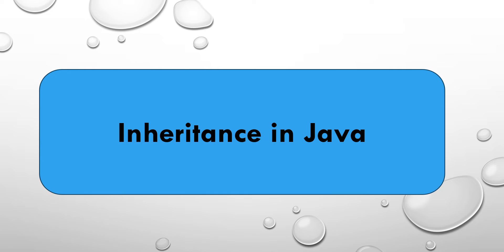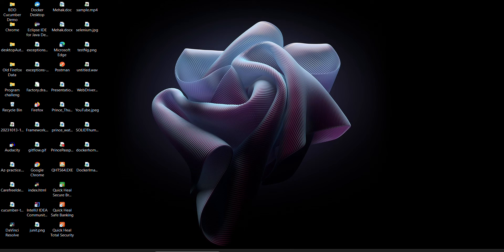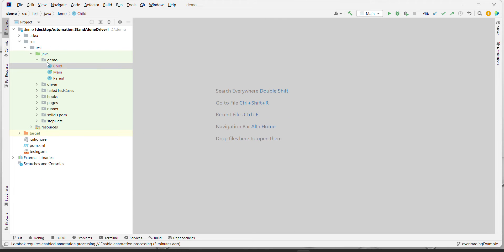What is inheritance in Java? Let's first understand it from real life. For example, if our father is running some business, by default it would be ours because we are the child of our parent. The same thing is applicable in Java, but it is not available by default - we need to create a parent-child relation between classes. We do this to achieve reusability.